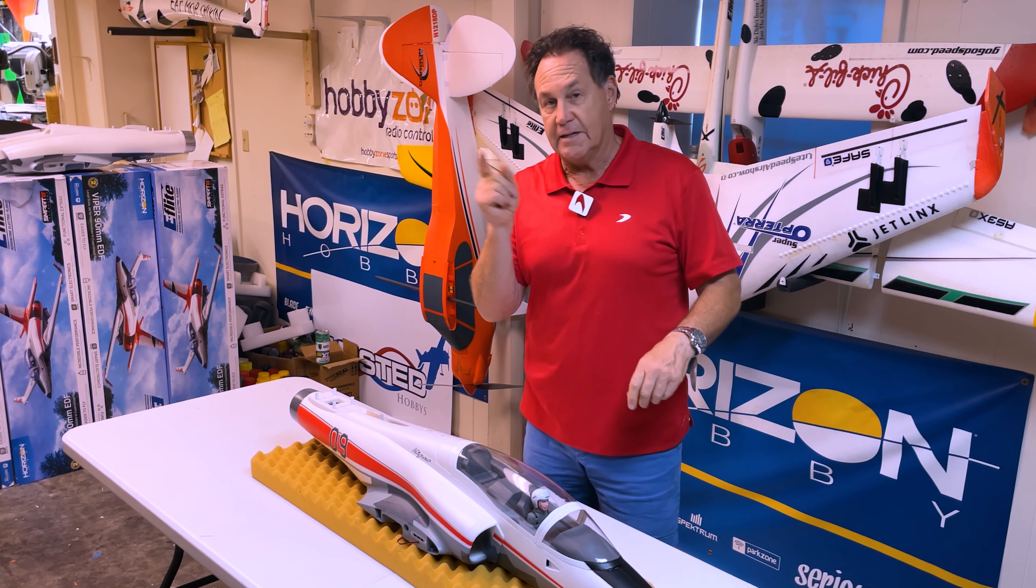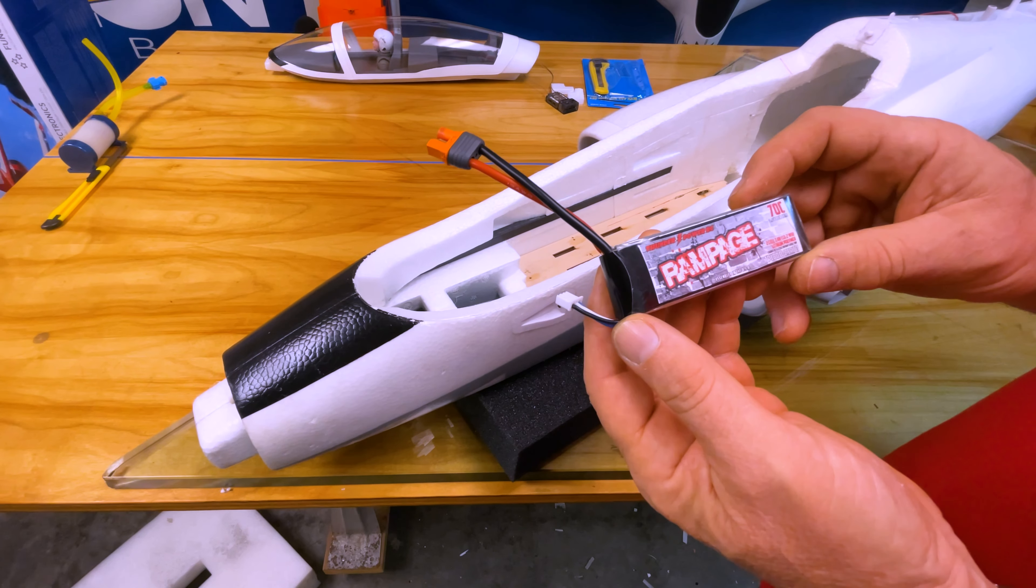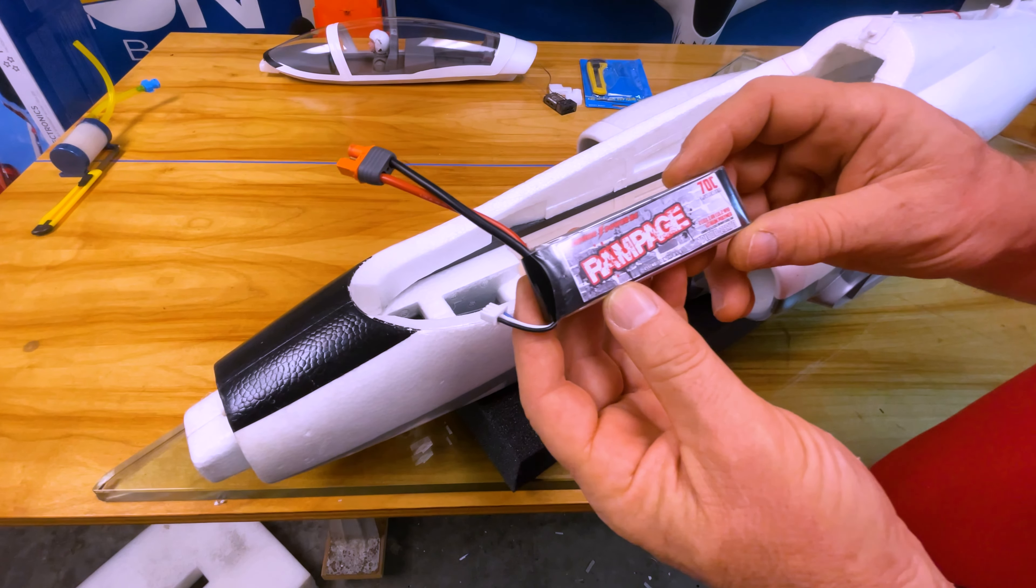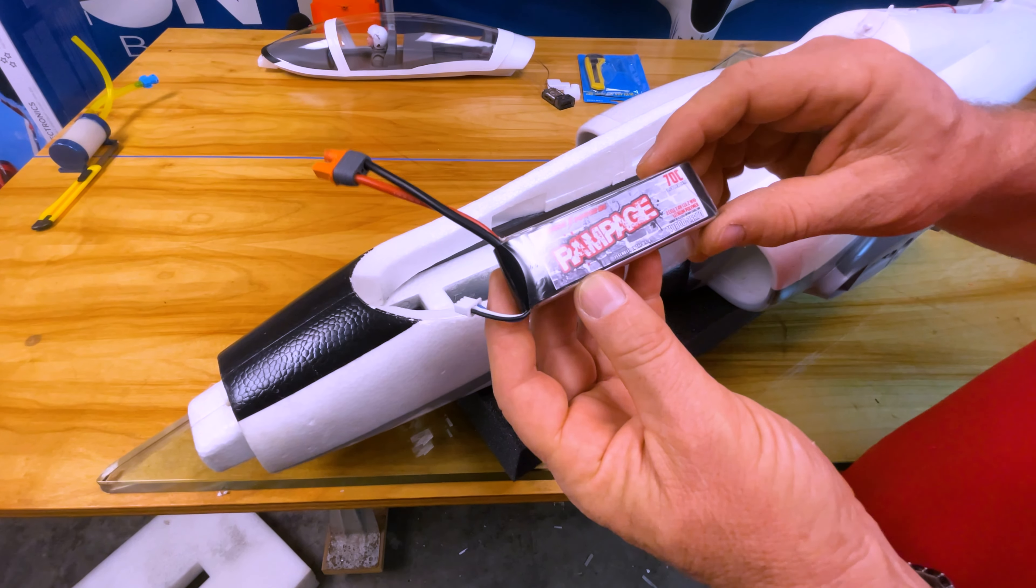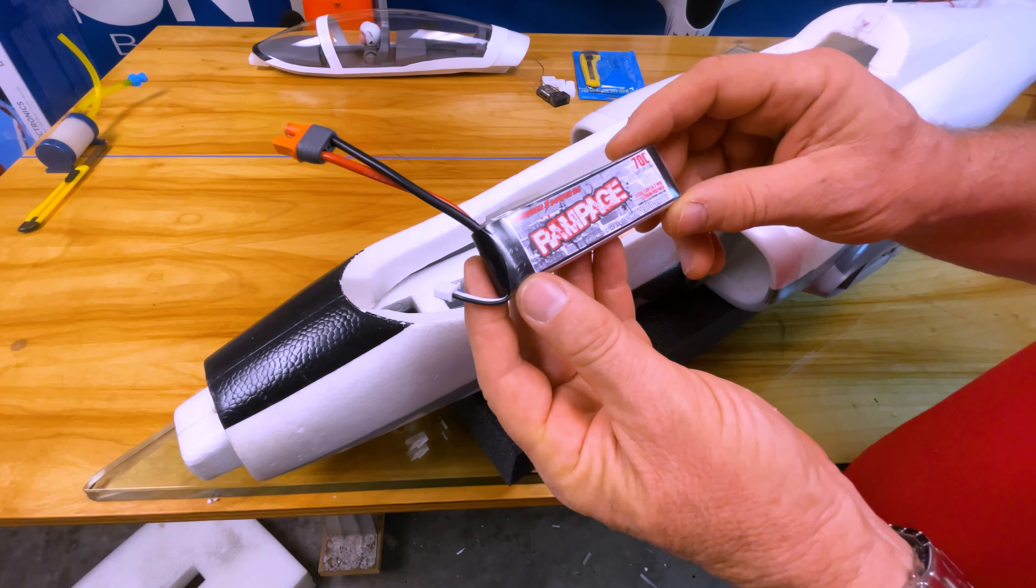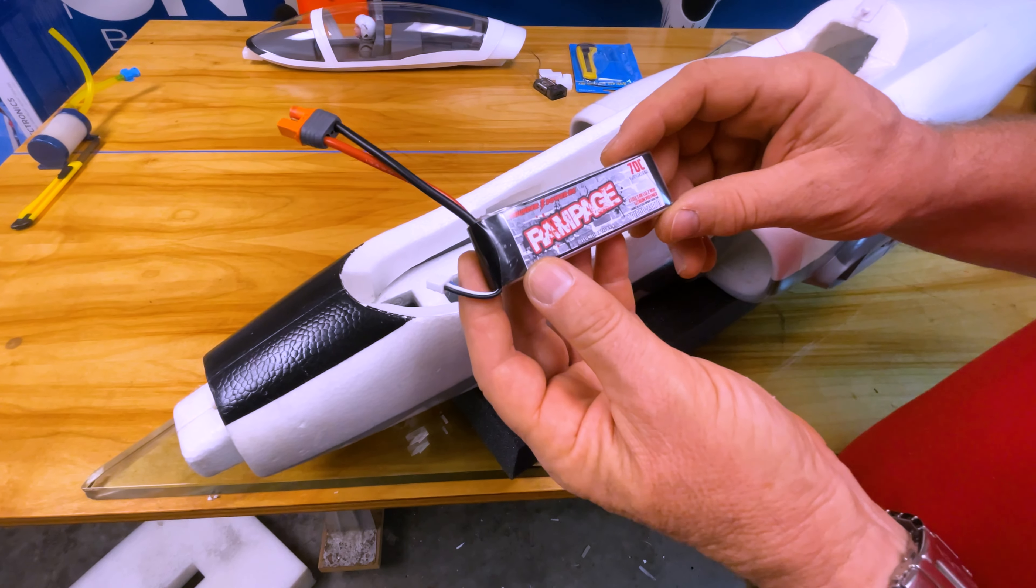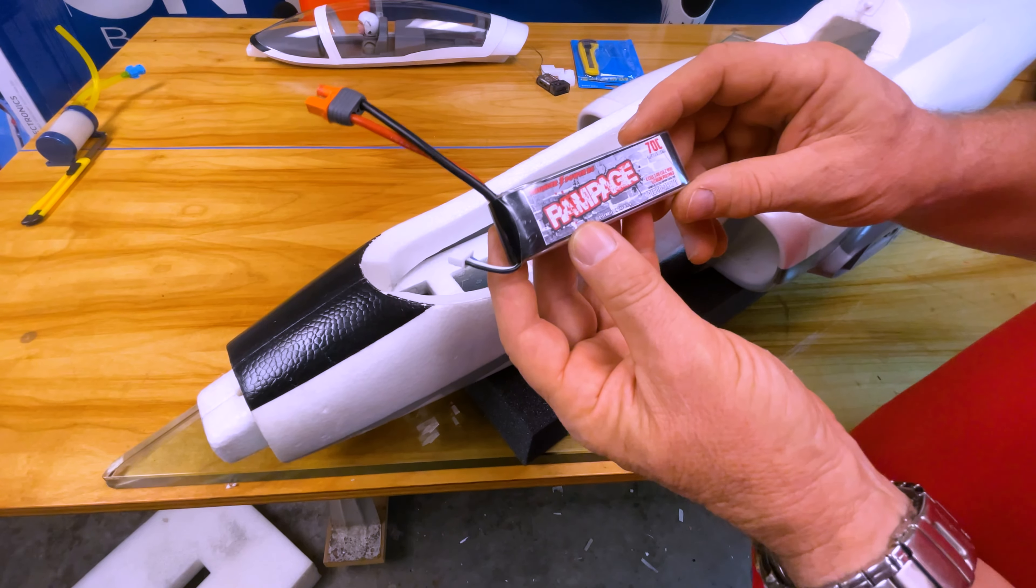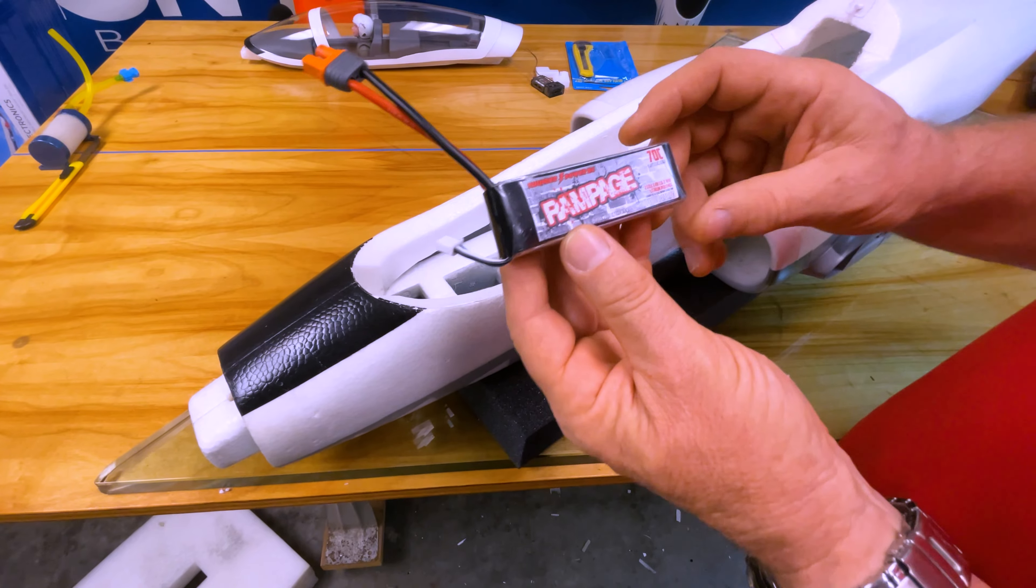Without further ado, let's get started. We have our battery installation modification here. We use the Thunder Power Rampage 1800 milliamp battery. It's a 2S 70C battery. It is the only battery that goes inside this Viper. We run everything off of this battery: the engine, the brakes, the smoke pump, and also the flight controls. So one battery we charge every flight.